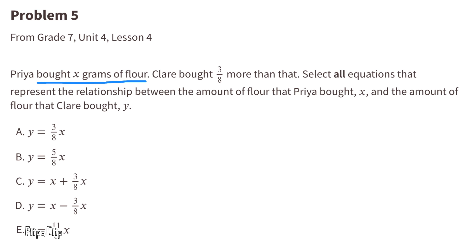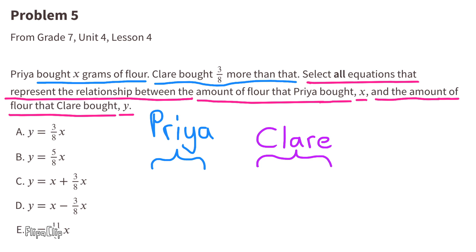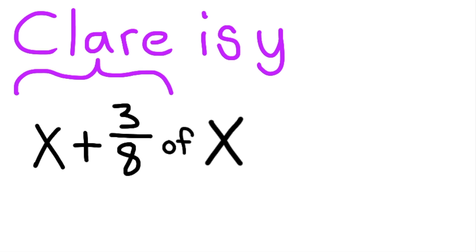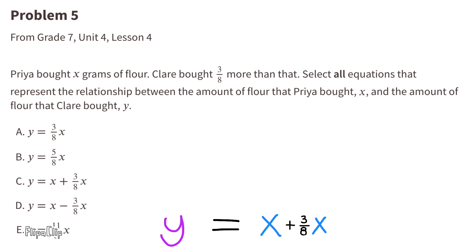Number 5. Priya bought X grams of flour. Clare bought 3 eighths more than that. Select all equations that represent the relationship between the amount of flour that Priya bought, X, and the amount of flour that Claire bought, Y. X represents Priya, and Y represents Claire. Since Claire bought 3 eighths more than Priya, Y would equal X plus 3 eighths of X. Or, Y would equal X plus 3 eighths X.